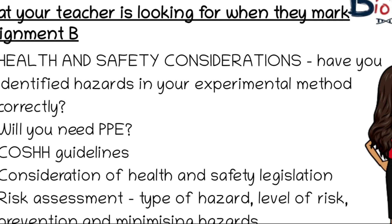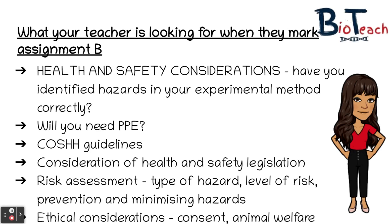The next part of your assignment should include various health and safety considerations for your investigation. Your school or college might provide you with a pro forma for a risk assessment — a form that you fill out — or you might get to create your own. Look at each part of your method and determine whether any actions present a risk: using a hot plate risks burns, a water bath risks spillage, glassware risks breakage, and an open flame from a Bunsen risks burns. You must discuss the type of hazard, the level of risk, the prevention of injury, and how to minimise hazards. I recommend creating a table in your logbook to cover each part of your investigation.